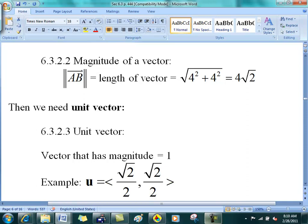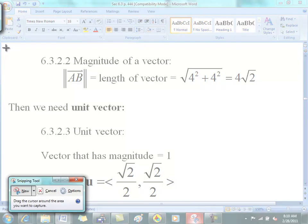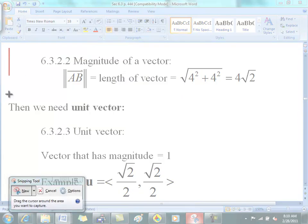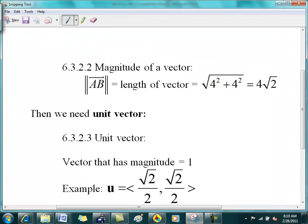The magnitude is given by very similar to what we've done before. Notice that this vector AB was like this - its X magnitude was 4 and its Y magnitude was 4. You know that its length is going to be equal to the square root of 4 squared plus 4 squared from the Pythagorean theorem.